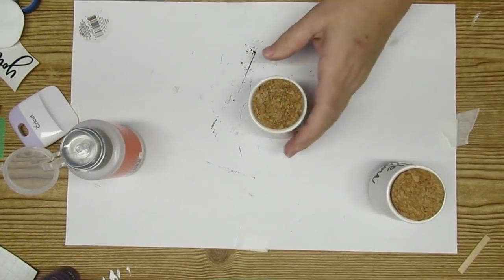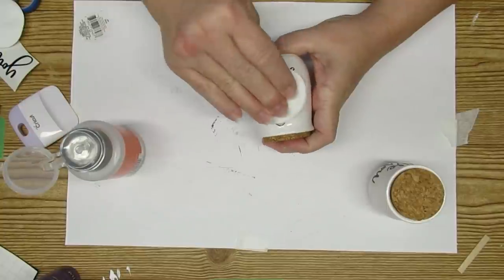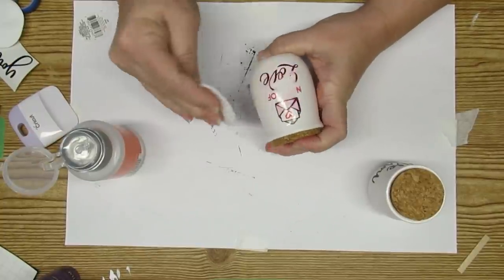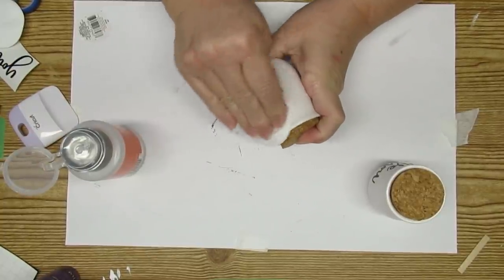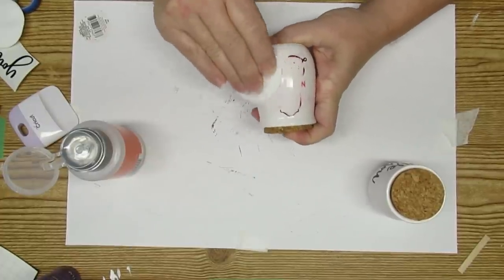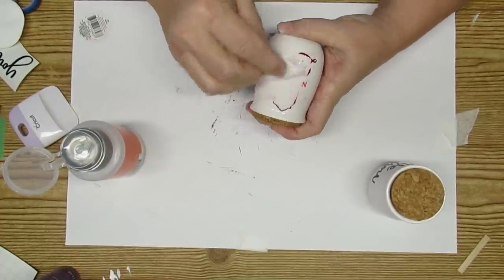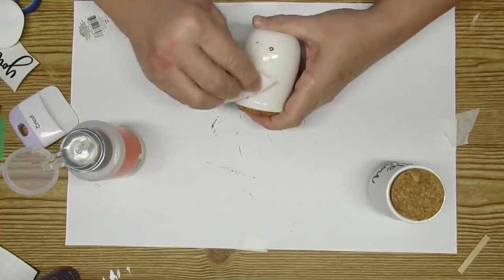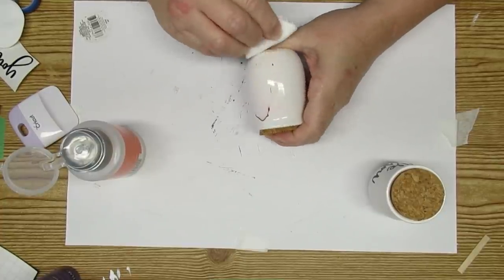This next DIY is super simple. I found these little love containers at the Dollar Tree and I'm using 100% acetone and a cotton round to remove the print that's on there. This will just leave them a really nice white and I'll be able to do whatever I want with them.